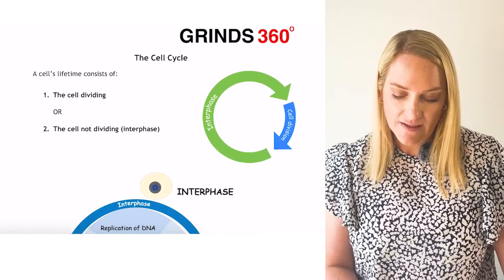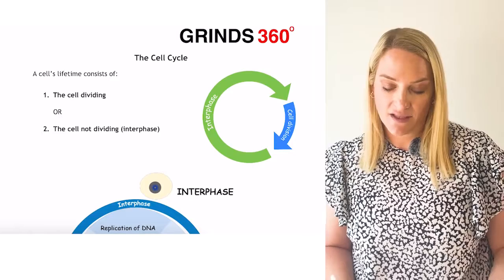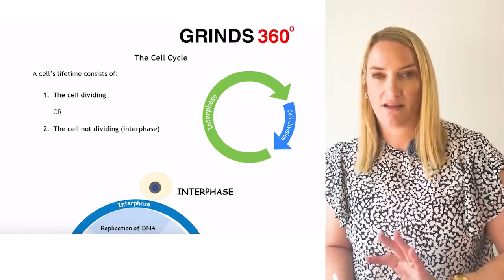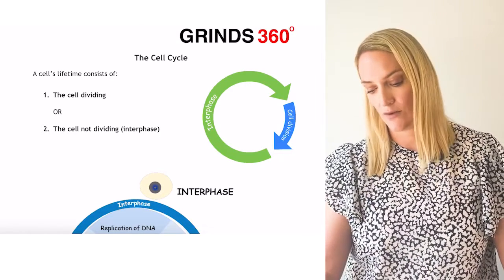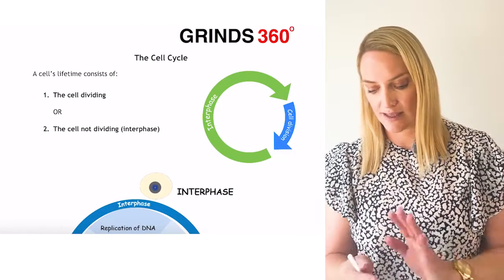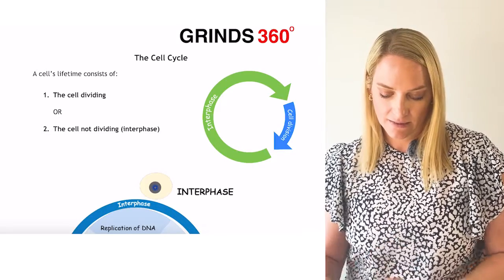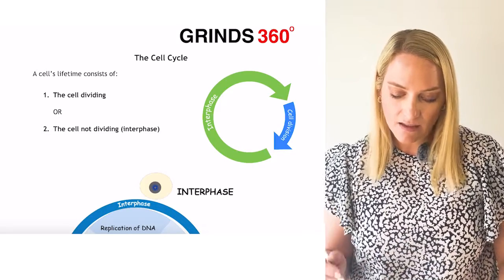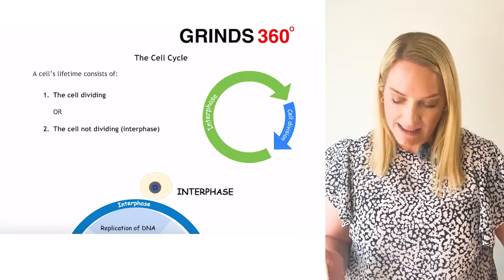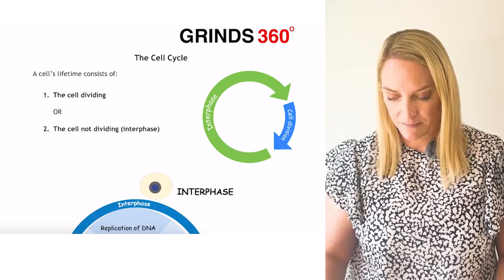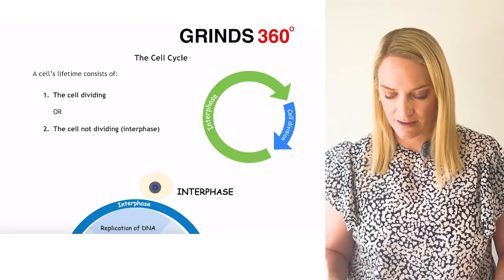A cell's lifetime consists of either dividing or not dividing. Like a pizza — the small slice is when cell division is taking place. The longest phase of the cell cycle, about 90%, is interphase, and then we have cell division.